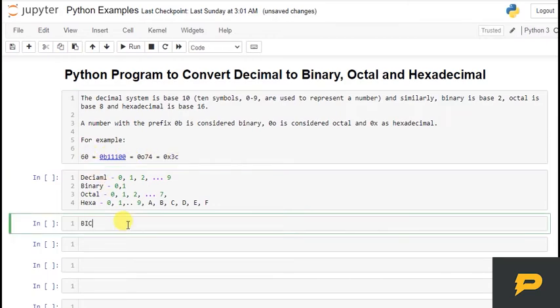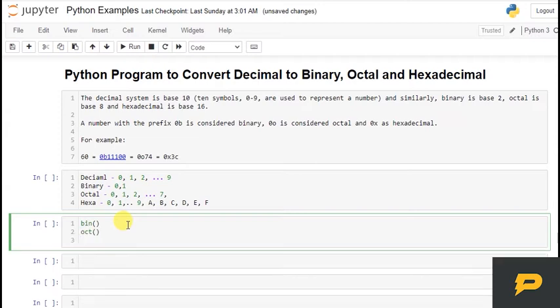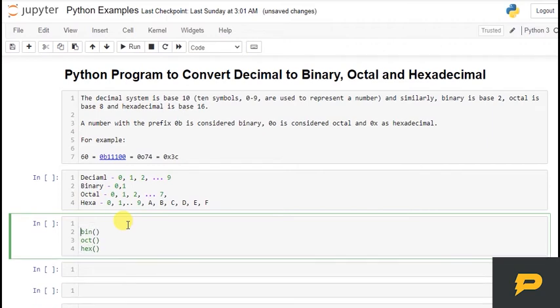Now Python has three beautiful functions. Bin, which converts any number into binary. Oct, which converts any decimal number into octal. And hex, which converts your decimal number into hexadecimal. So let's use these and print them out.